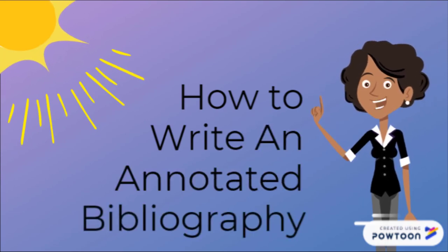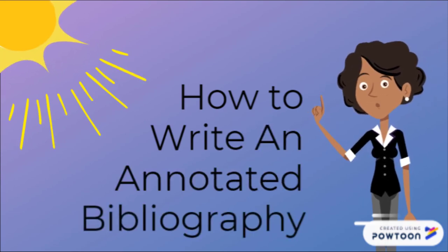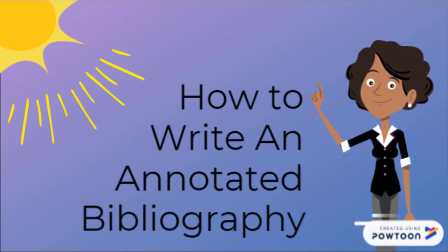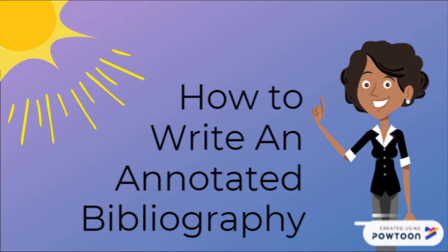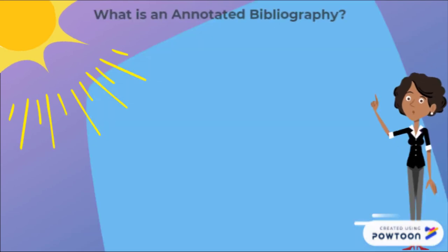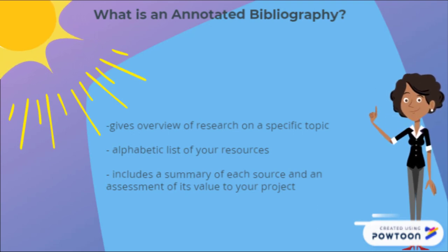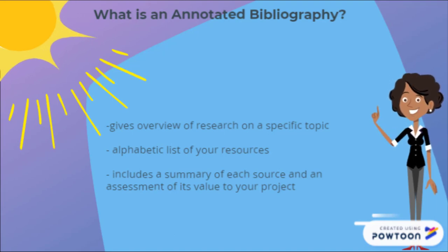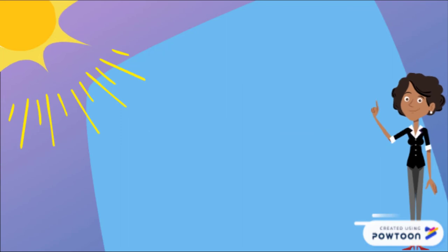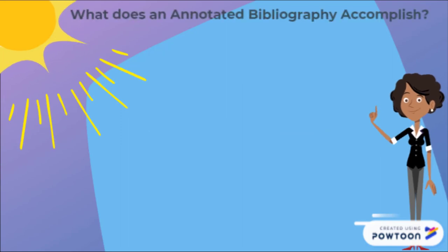An annotated bibliography gives an overview of the research that is being done on a given topic. Like any bibliography, it's an alphabetical list of research resources, but what makes it unique is it includes a concise summary of each source and some assessment of its value or relevance to your specific project.